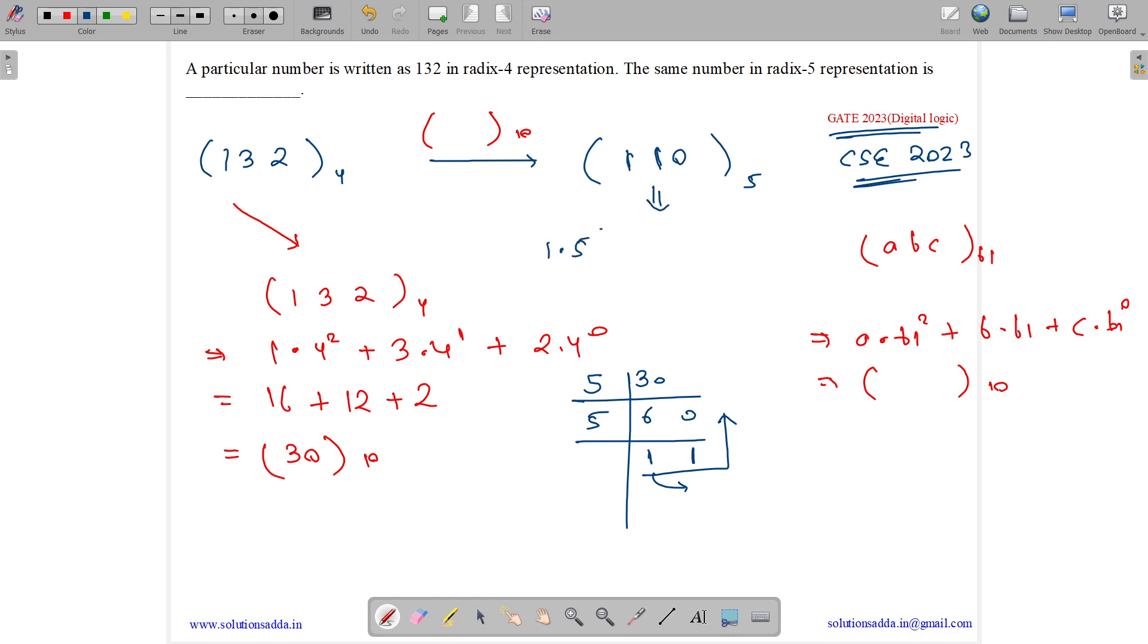It will be 1 into 5 square plus 1 into 5 to the power 1 plus 0 into 5 to the power 0. It will become 0, it's 25 and it's 5. So we can verify it is getting 30.